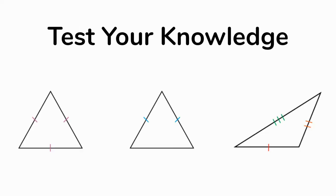Now it's time to test your knowledge. How would you classify the triangle in the middle? Isosceles — only two sides are equal. Which word describes the triangle on the right? Scalene — none of the sides are equal. And finally, let's classify the triangle on the left with the purple dashes. Equilateral — all sides are the same.